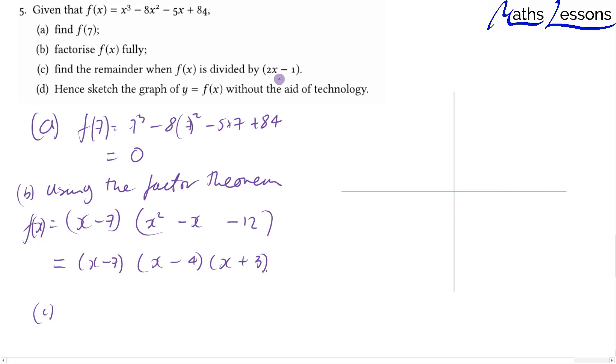We're going to use the remainder theorem to find f(1/2). So we do (1/2)³ minus 8 times (1/2)² minus 5 times 1/2 plus 84.